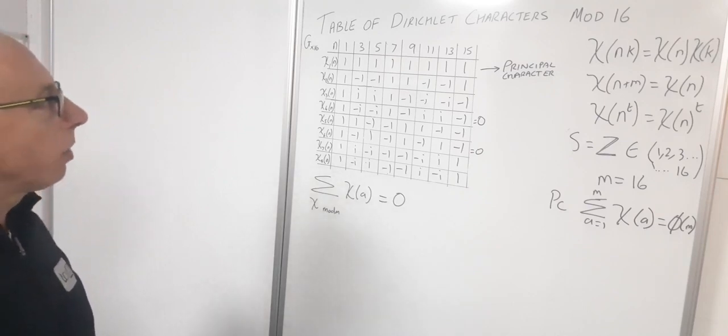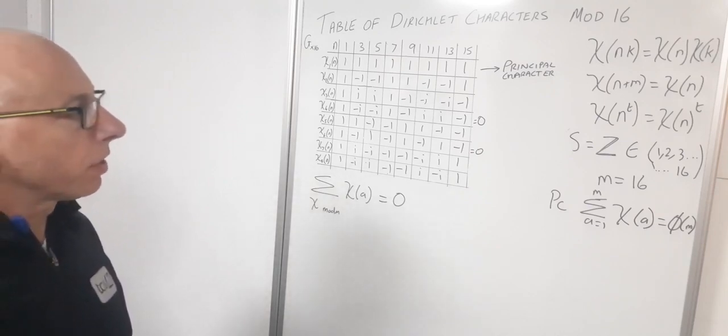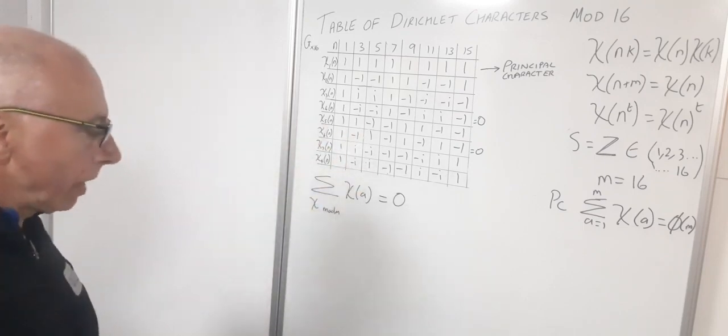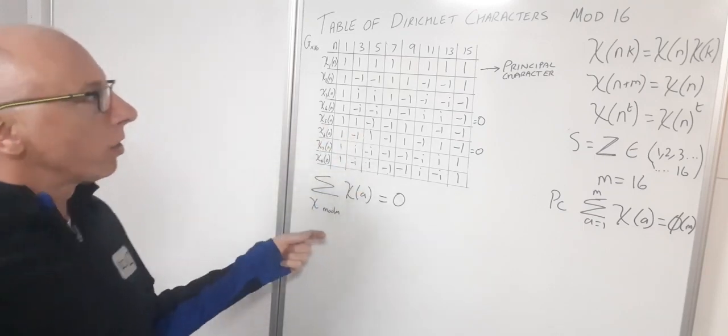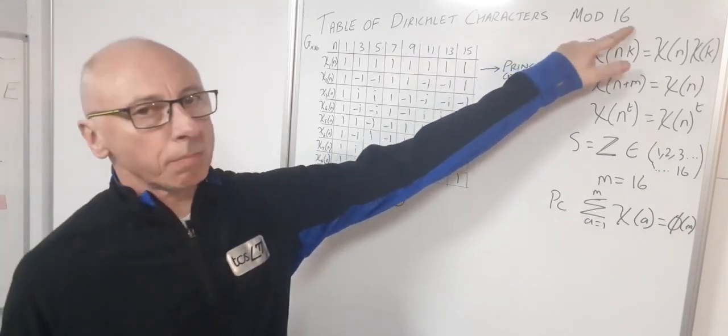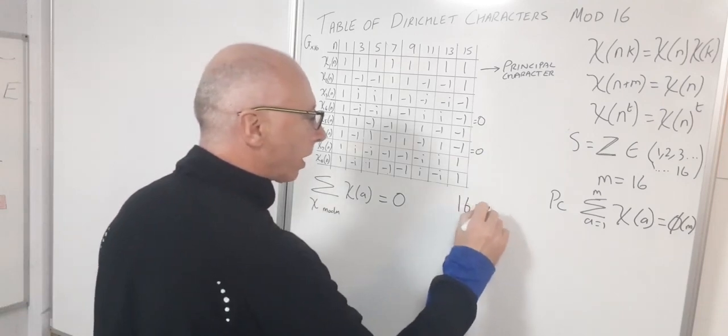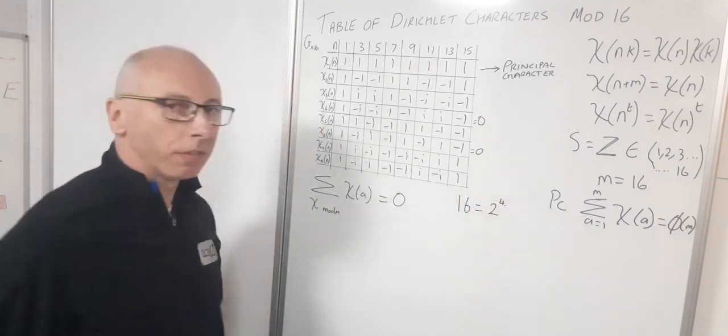Now what we need to know is how many different values will be inside the box. Basically what we need is to work out the property of this modulus number 16. So 16 is a power of 2: 16 equals 2 to the power of 4.